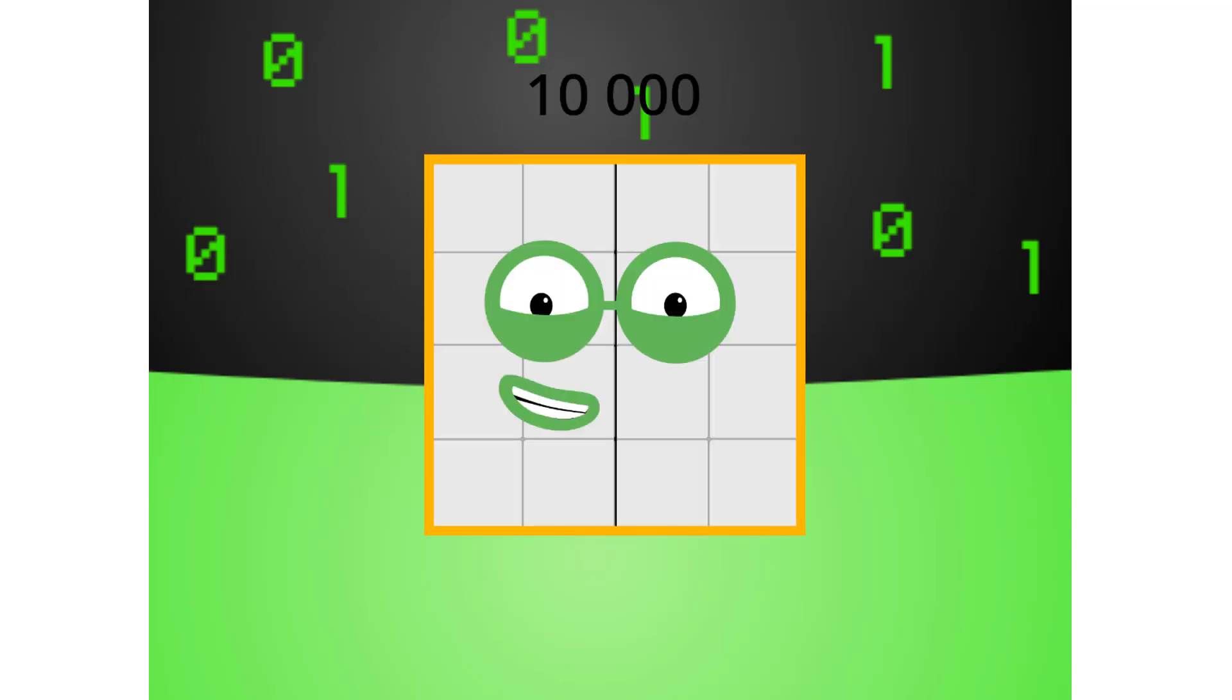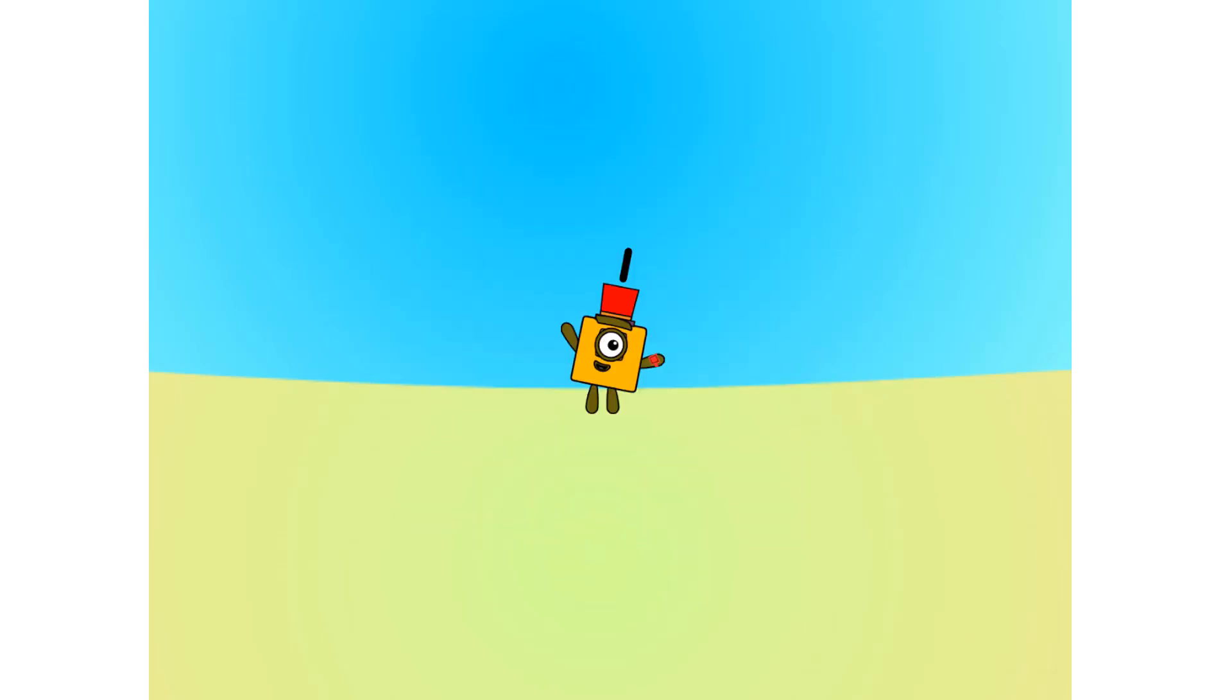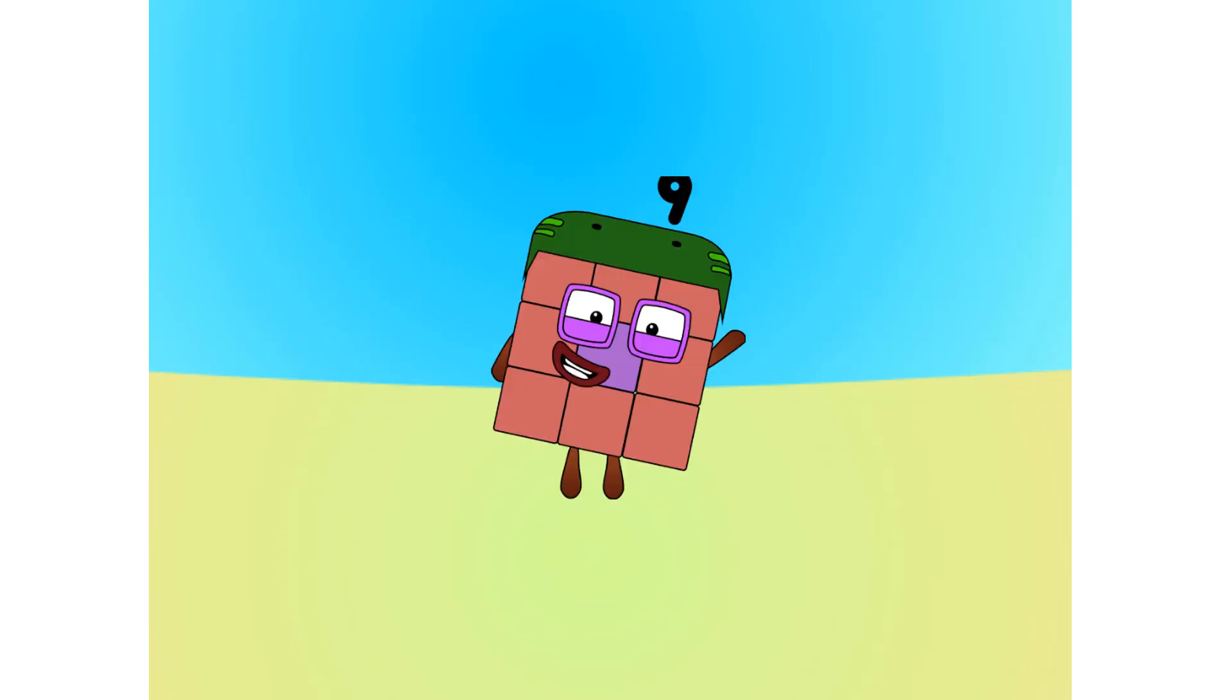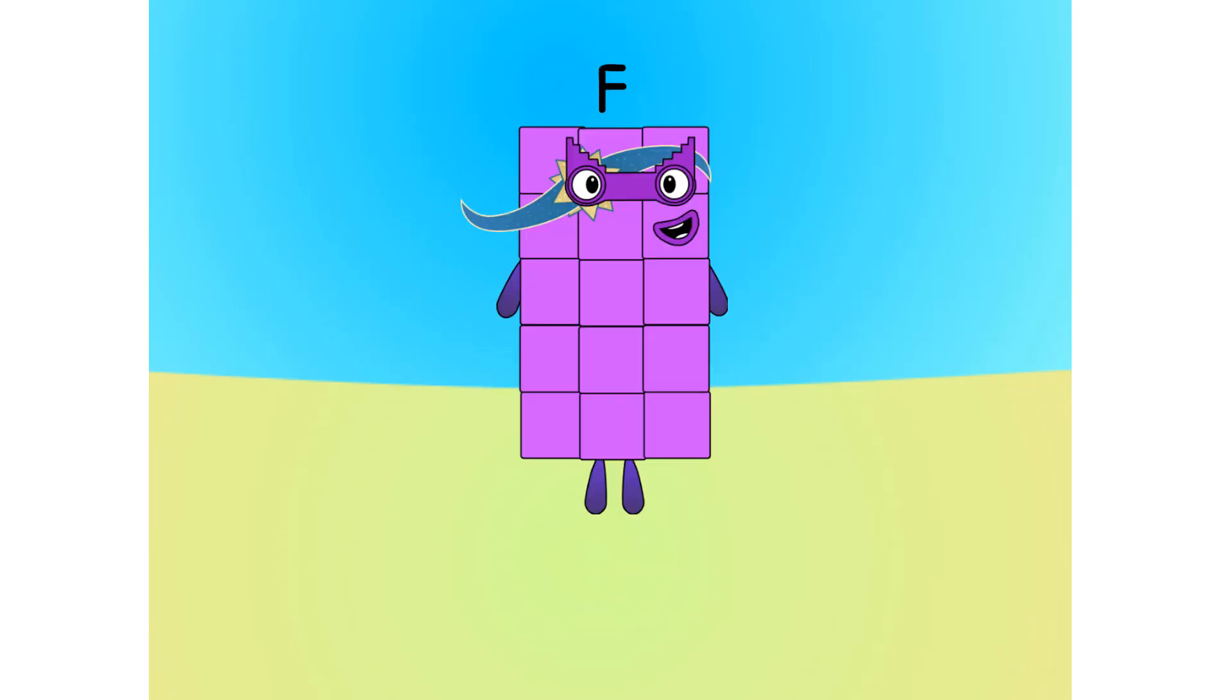Let's move on to the next base. This is base 16, also known as hexadecimal, or hex. If this is base 16, there needs to be 16 digits: 1, 2, 3, 4, 5, 6, 7, 8, 9, A, B, C, D, E, F, 1-0.